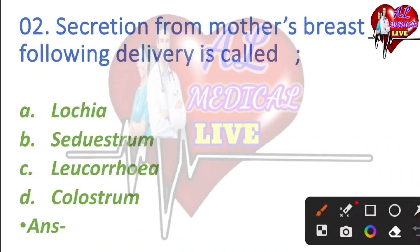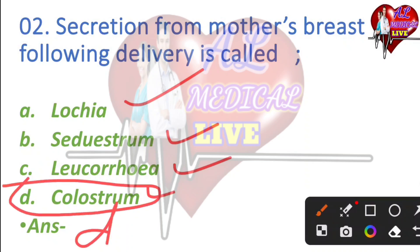Secretion from the mother's breast following delivery is called — for this information, which is the secretion from the mother's breast after delivery? The right answer: option D is the correct answer — colostrum. Colostrum is the secretion from the mother's breast after delivery.